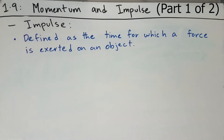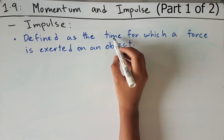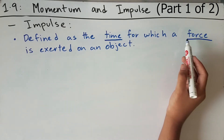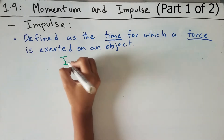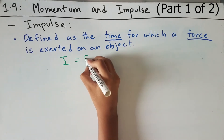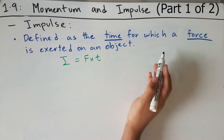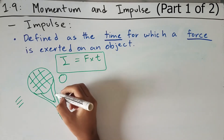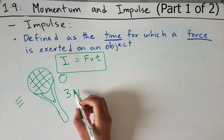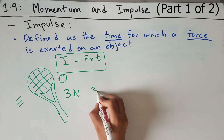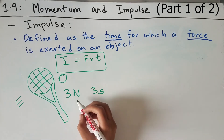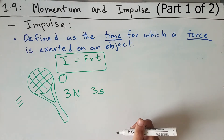Now let's talk about impulse. Impulse is defined as the time for which a force is exerted on an object. The key terms are time and force — a force is being exerted on an object for a certain amount of time. Impulse, represented by the letter I, equals force times the amount of time for which the force is exerted. For example, say you were playing tennis and you strike the ball with a force of three newtons, applying this force for a duration of three seconds.